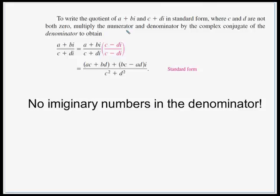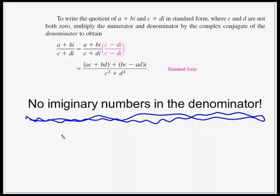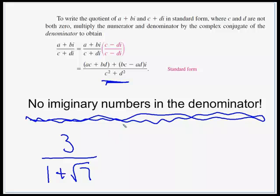To write the quotient of two complex numbers — a plus bi over c plus di in standard form, where c and d are not zero — multiply the numerator and denominator by the complex conjugate of the denominator. It's a lot like rationalizing with radicals earlier in the year. When done correctly, there will be no imaginary numbers left in the denominator.